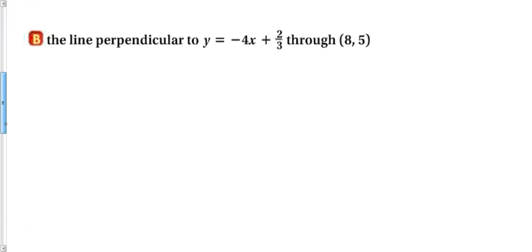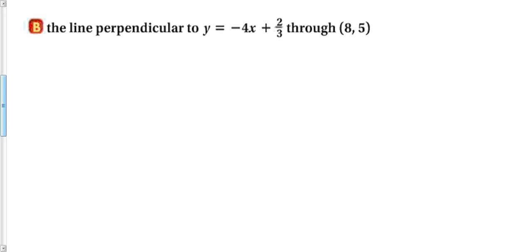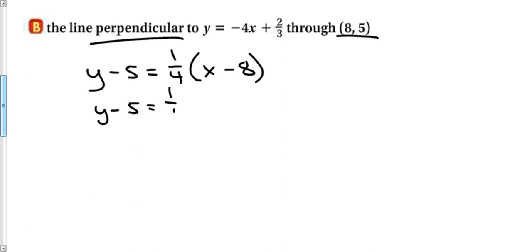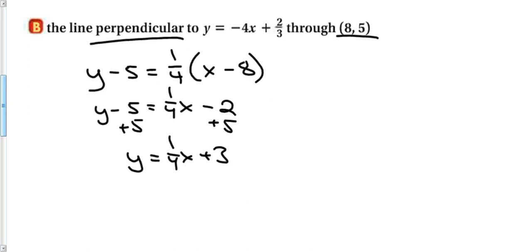For a perpendicular line: if the original slope is −4, the perpendicular slope is the negative reciprocal, +1/4. Through point (8, 5): y − 5 = (1/4)(x − 8). Distributing: y − 5 = (1/4)x − 2. Adding 5 to both sides: y = (1/4)x + 3. That's the equation of the perpendicular line in slope-intercept form.